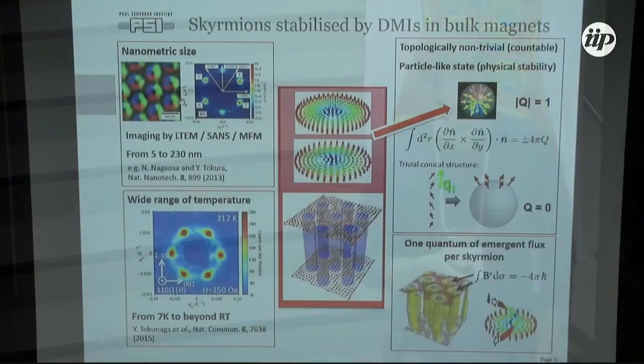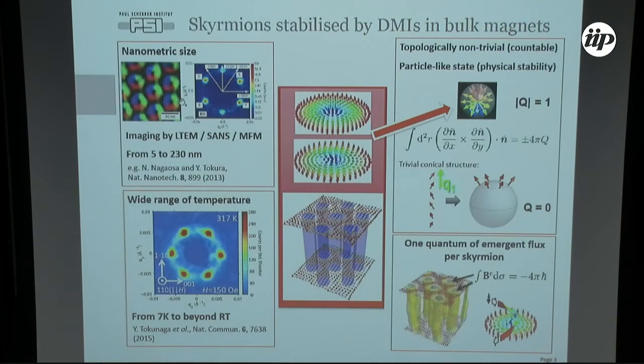Typically they arrange into hexagonal patterns, hexagonal lattices. These objects have a nanometric size, and therefore the suitable probes are Lorentz force transmission electron microscopy, small-angle neutron scattering, and magnetic force microscopy. But there are more and more techniques being applied to studying these objects. Basically, if you know where to look, you can probably work out the signature of how these skyrmions will appear in your measurements.